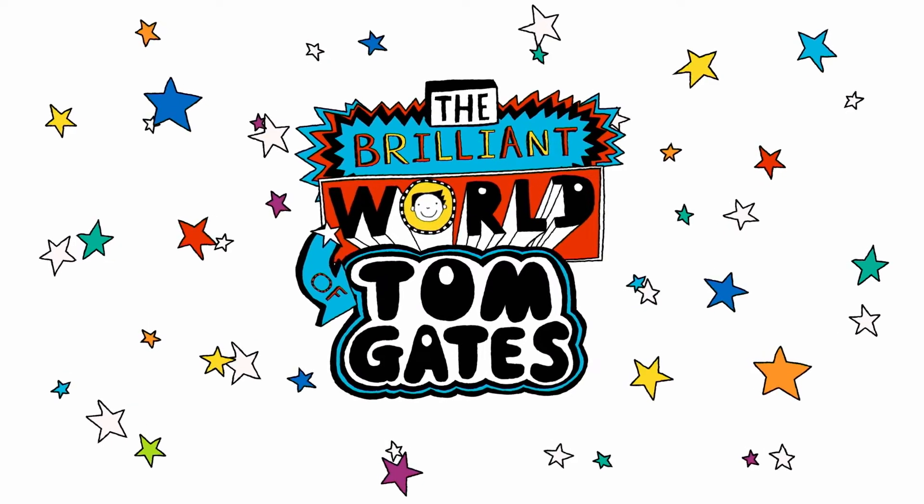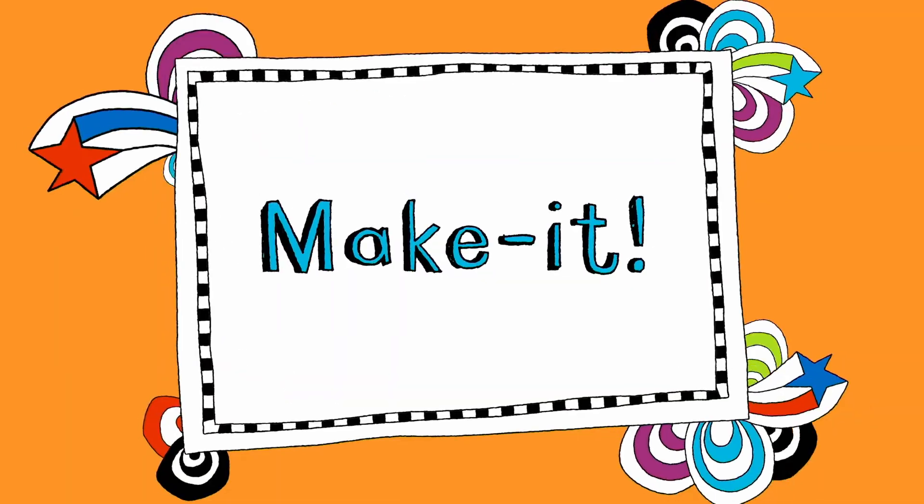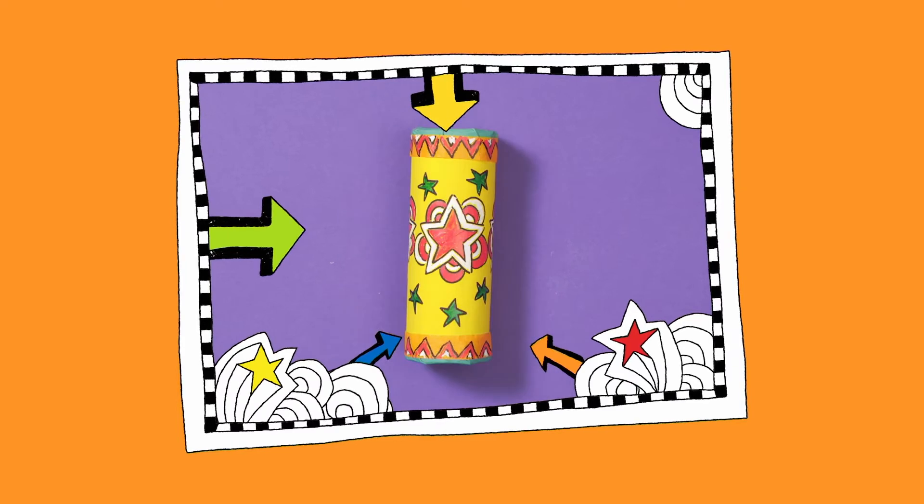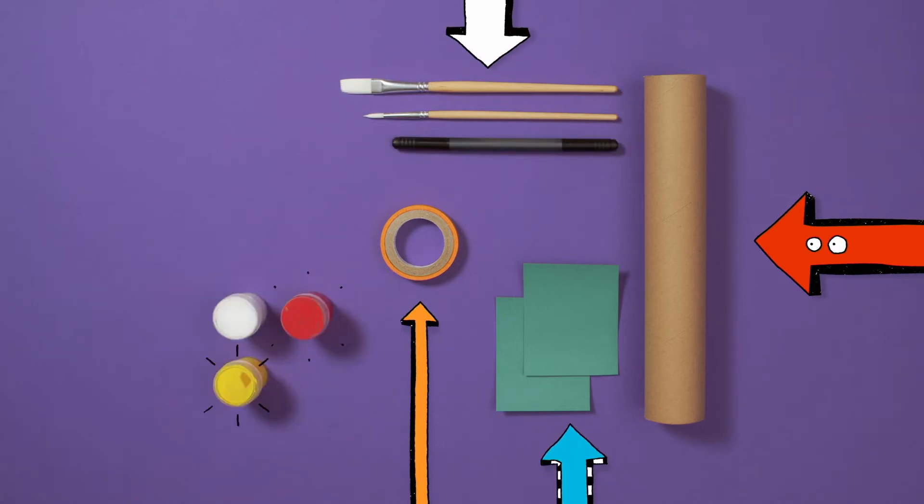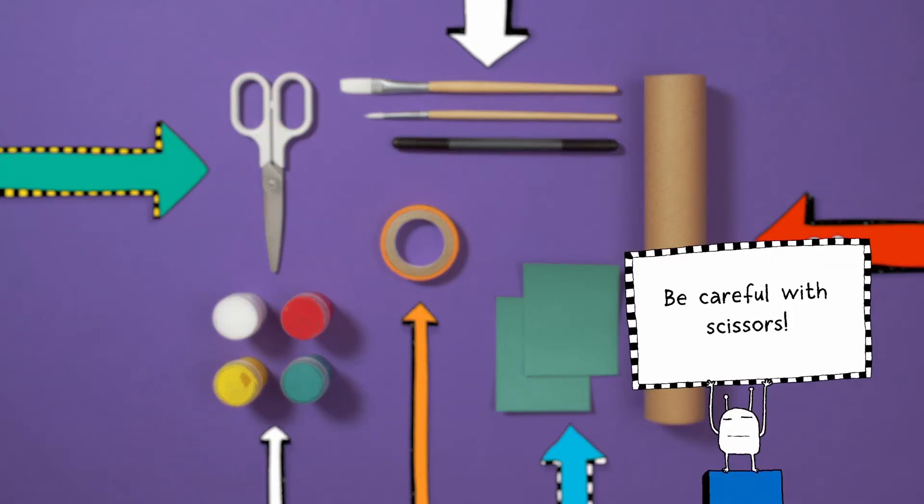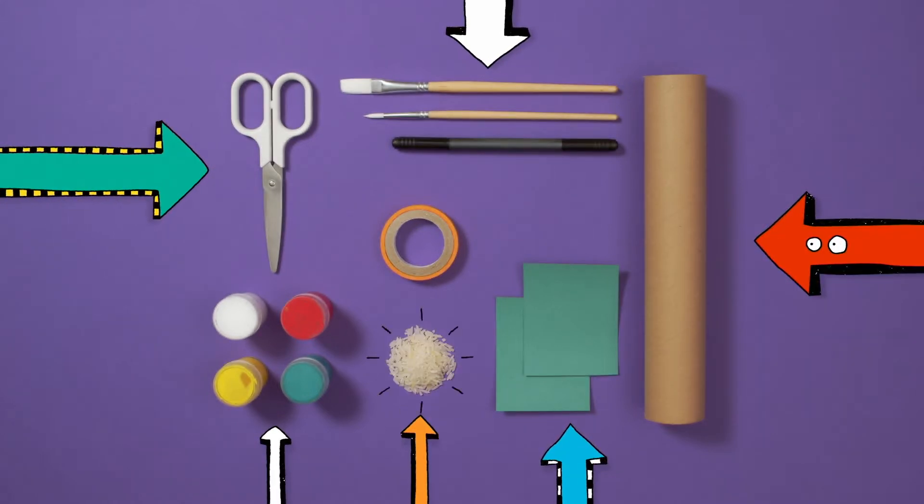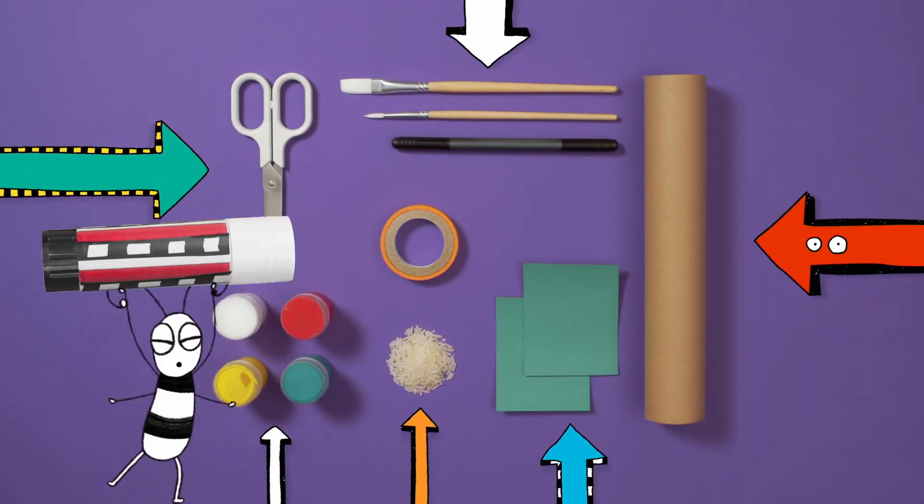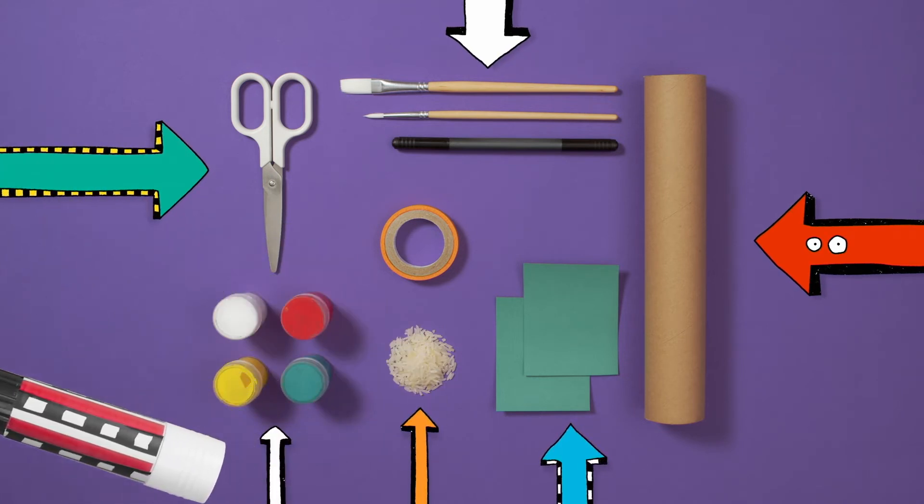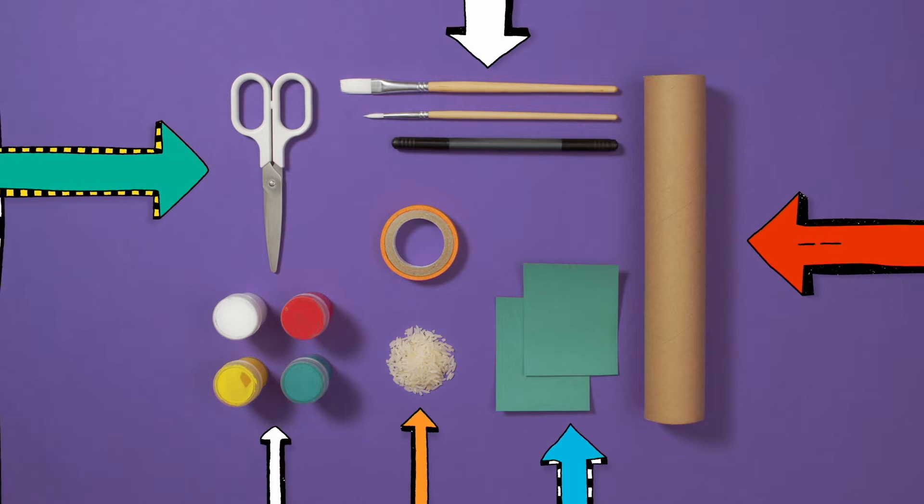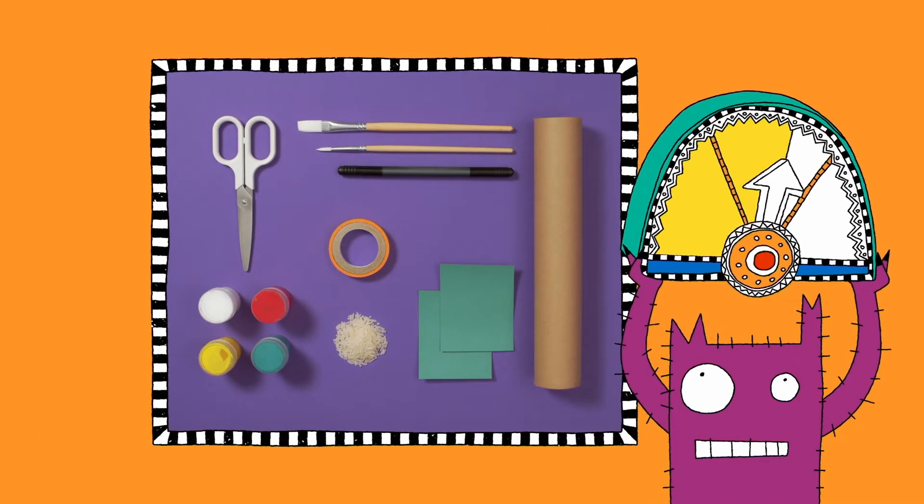Welcome to my brilliant show. Let's make a shaker. You will need a cardboard tube, two pieces of coloured paper, sticky tape, two paint brushes, a pen, some colourful paint, scissors—be careful with scissors—and some dry rice. Yep, I said rice. And the glue stick. And the glue stick, sorry. We don't need a glue stick. Oh, alright. Got all that?